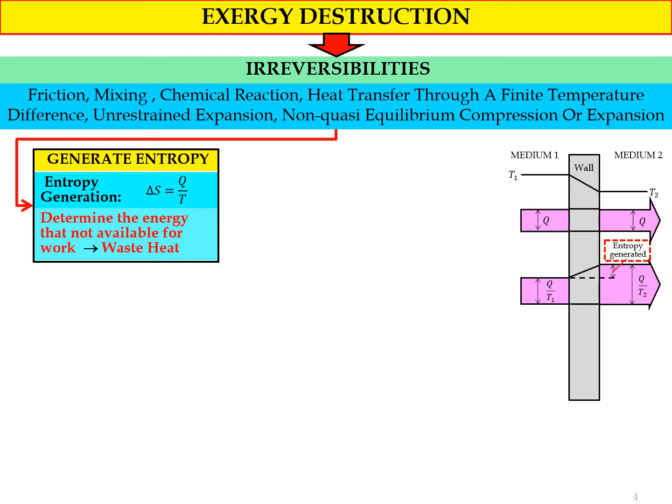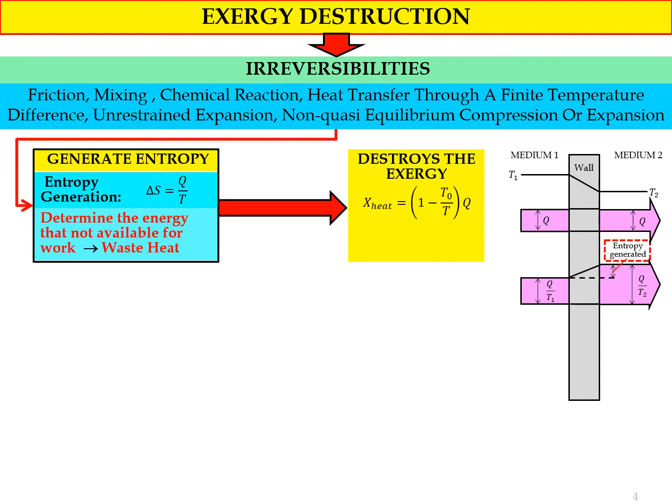We know from irreversibility that when there are losses, entropy is generated, and this entropy destroys the exergy. From the exergy equation, X_exergy equals one minus T_not divided by T, times Q.